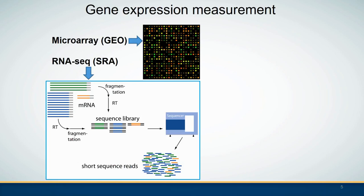There are mainly two types of technologies that can measure gene expression. One is microarray and the other is RNA-seq. Microarray is a well-developed technology and a large number of such datasets can be downloaded from the NCBI Gene Expression Omnibus database.